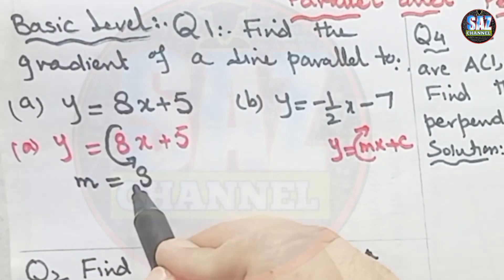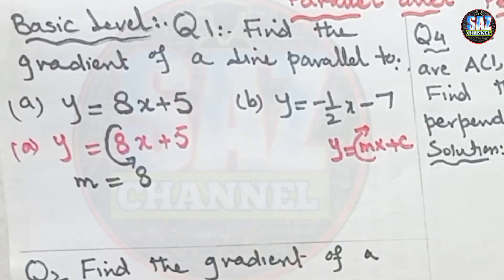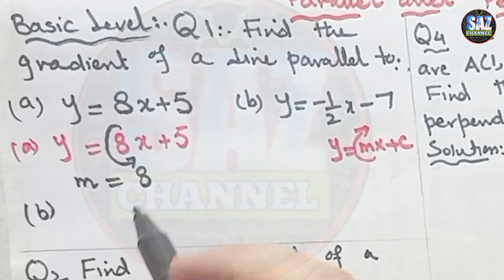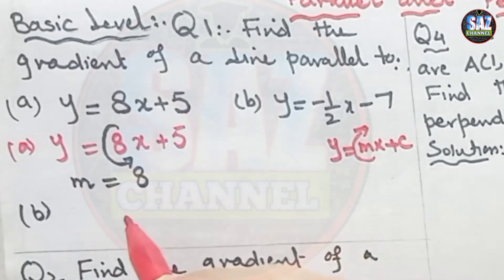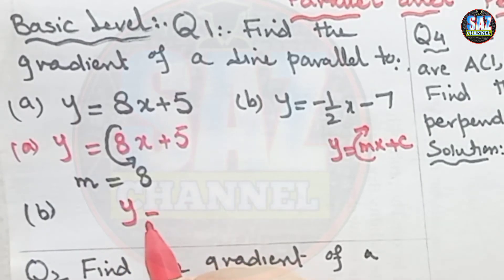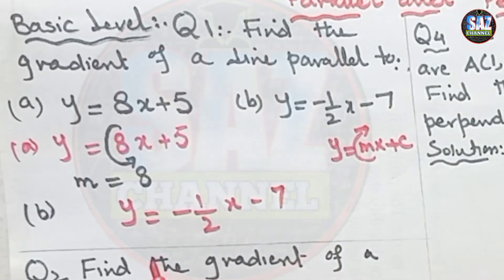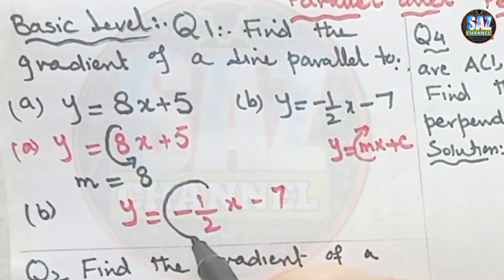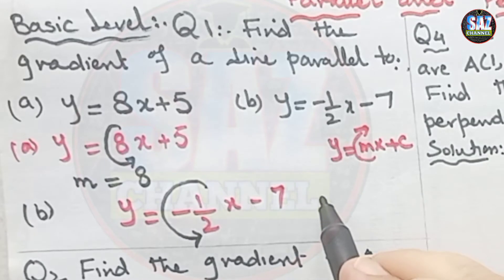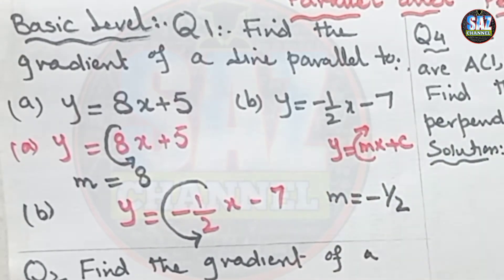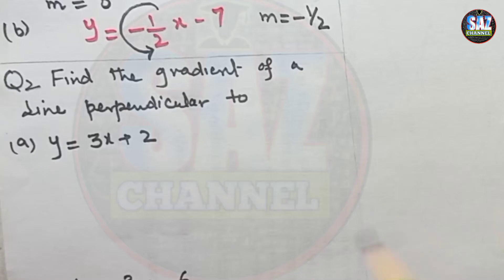These can come in Paper 1 of the O Level examination, so you have to watch this lesson carefully. Coming to the second line: the second line is y equals minus one-half x minus 7. The line is expressed in the standard form of a non-vertical line, and the coefficient of x is minus one-half. So m of this line is minus one-half.